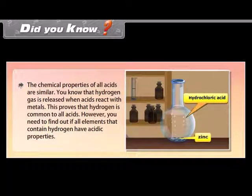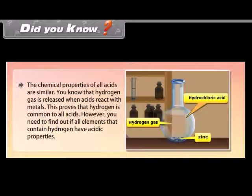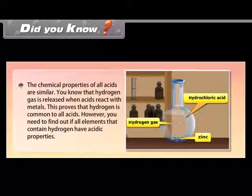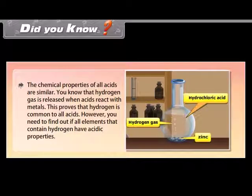Did you know? The chemical properties of all acids are similar. Hydrogen gas is released when acids react with metals, which proves that hydrogen is common to all acids. However, you need to find out if all elements that contain hydrogen have acidic properties.